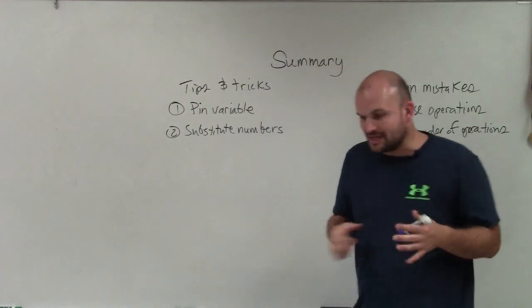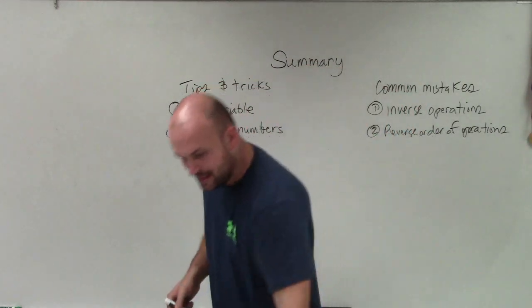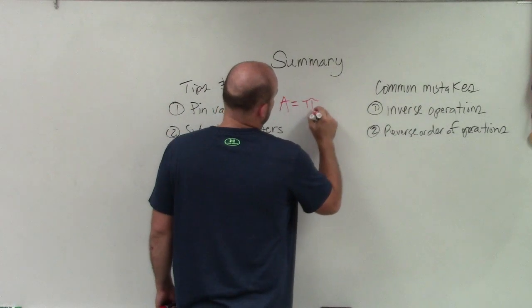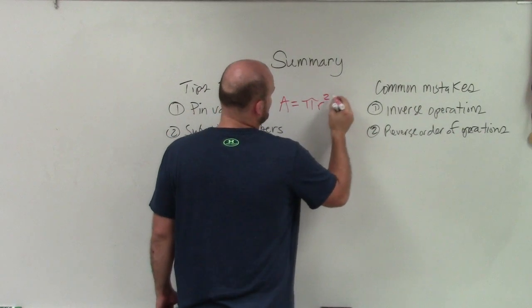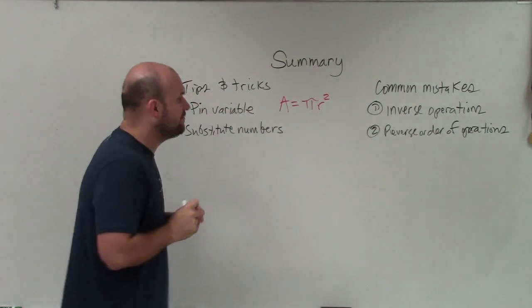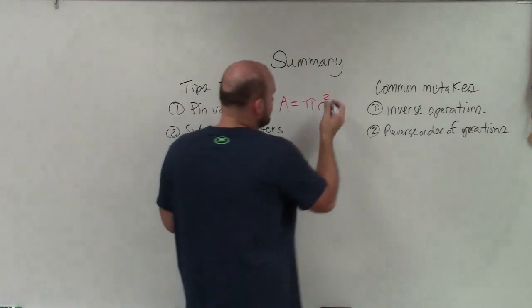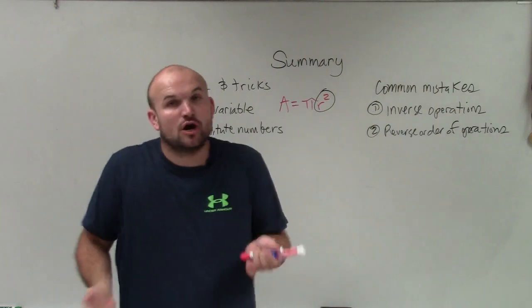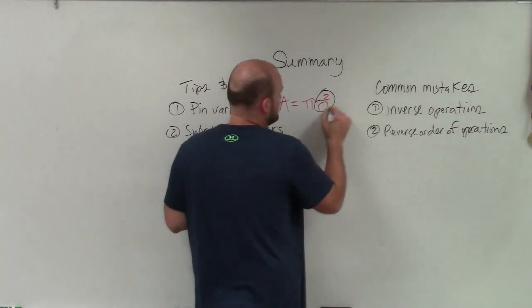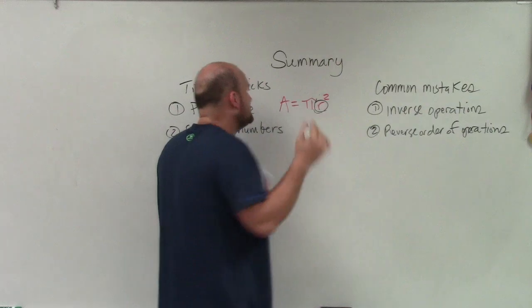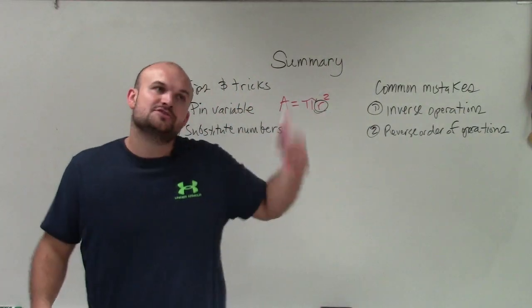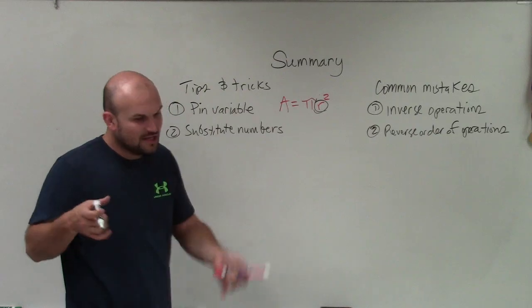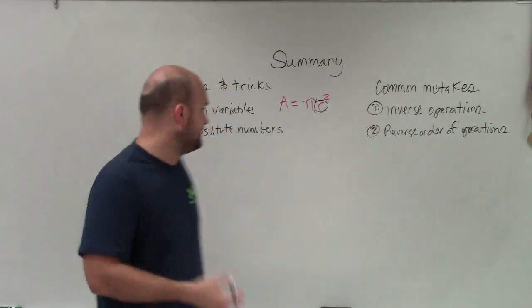So some kind of tips and tricks that I like is pin your variable. If you're given the equation area equals pi r squared and you're trying to solve for r, well then circle the r and then say alright what is happening to my r squared that I need to undo. Or circle the r really because you know what operations are happening to my r that I need to undo. So you'd undo multiplying by pi on both sides and then go into the square. So always looking to undo what's happening to the variable.